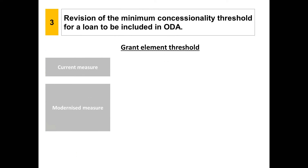The grant element threshold for a loan to be included in ODA has also been revised and will likewise be differentiated by the recipient income group. The current threshold is 25%. In the modernized measure, it has been increased to 45% for loans to LDCs and other LICs. This means that the conditions of loans to poorer countries will need to be softer than in the past.